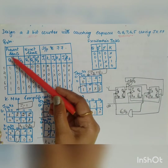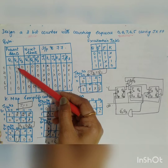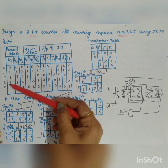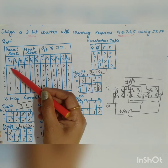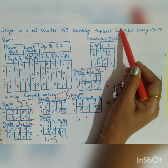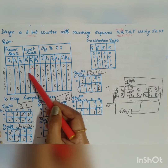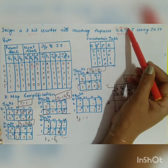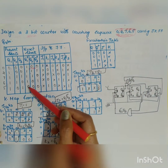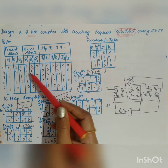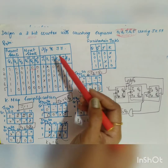From the characteristic table, the present states are 0, 4, 7, 6, 5 — in binary: 000, 100, 111, 110, and 101. The next states follow the sequence: from 0 it goes to 4, 4 to 7, 7 to 6, 6 to 5, and from 5 it goes back to 0.